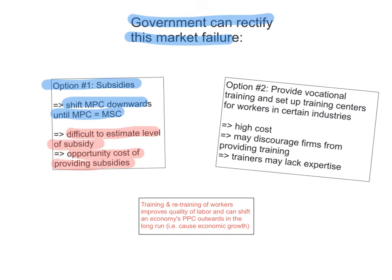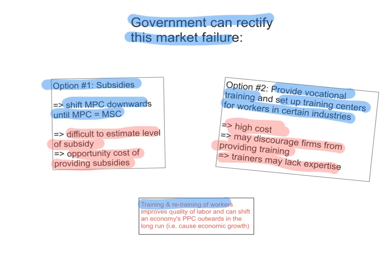The second option is the government actually providing vocational training itself and setting up training centres for workers in certain industries. The problem with this option is that it's quite costly and there is an opportunity cost as well. This may actually discourage firms from providing training themselves — when they see that the government is providing all this training, they might decide not to provide training themselves. Also, the trainers may lack the industrial experience that is needed. Regardless of the costs, training and retraining workers improves the quality of labour, and in the long run it can shift the economy's production possibilities curve and causes economic growth. Training and education in general have very high external benefits and are worth the investment and worth government spending being allocated to them.